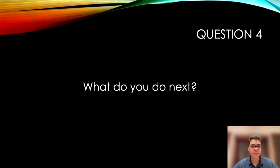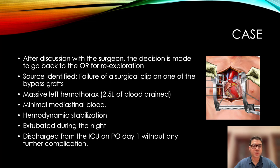So what do you do next? After discussion with the surgeon, the decision is made to go back to the OR for re-exploration. The source is identified: failure of a surgical clip on one of the bypass grafts. This is quickly corrected by the surgeon. A massive left hemothorax is found and 2.5 liters of fresh blood is drained. There is minimal mediastinal blood. Hemodynamic stabilization quickly occurs. The patient is brought back to the ICU where he is extubated during the night, and discharged from the ICU on post-op day one without any further complications.